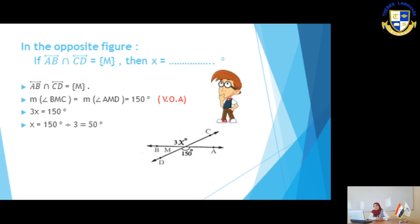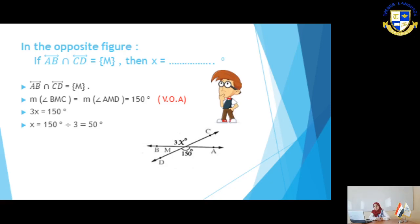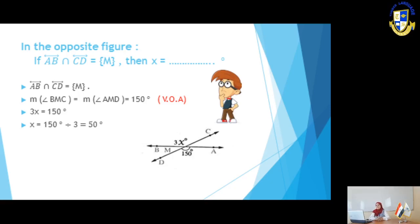Now we solve the equation. 3X means 3 multiplied by X. To find the value of X, we perform the opposite operation and divide 150 by 3, giving 50 degrees. So X equals 50 degrees. Let's move to slide number 8.